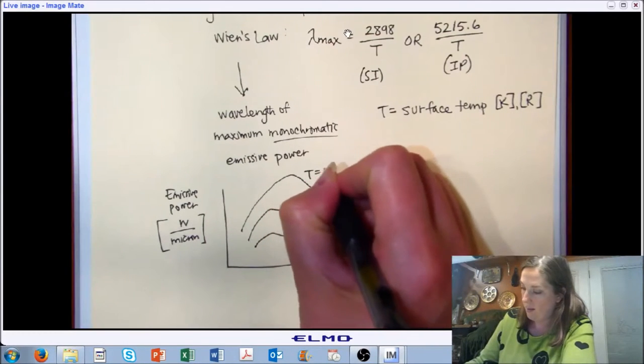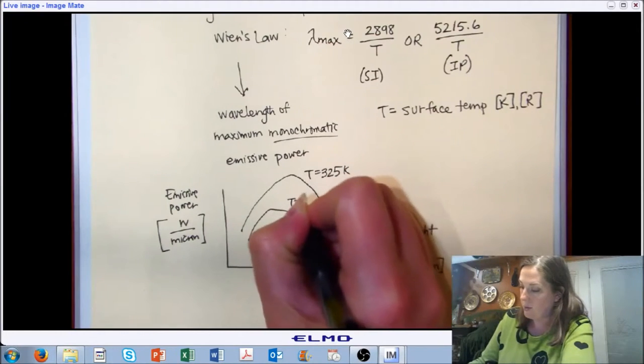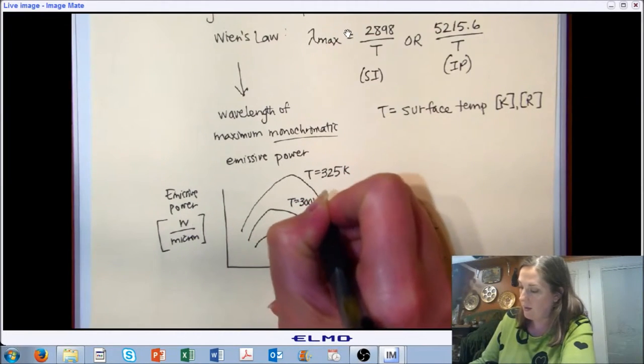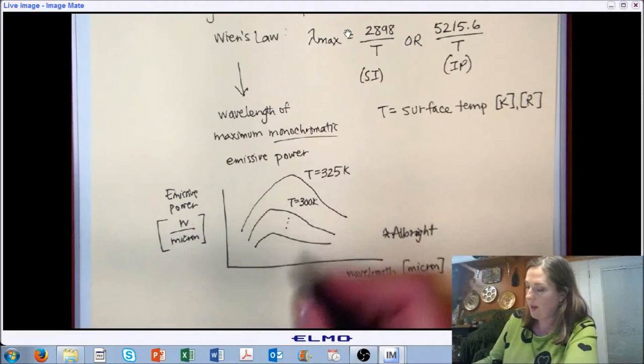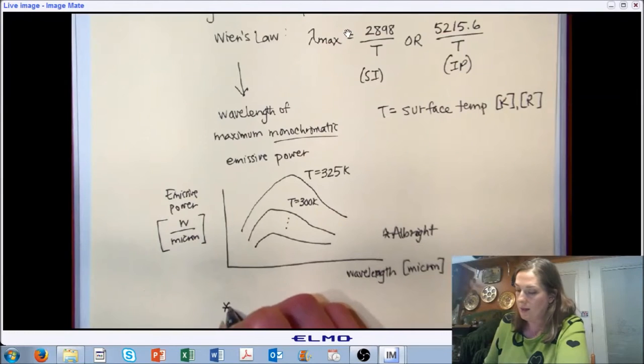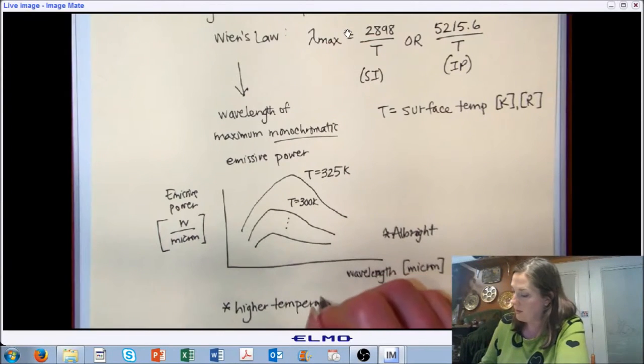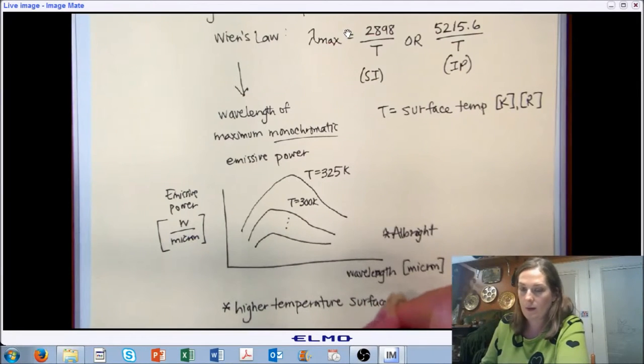In that plot, the highest temperature is the top line. The temperature goes down as we move to the shorter and shorter lines. Essentially what this is demonstrating is that higher temperatures or higher temperature surfaces emit shorter wave radiation.